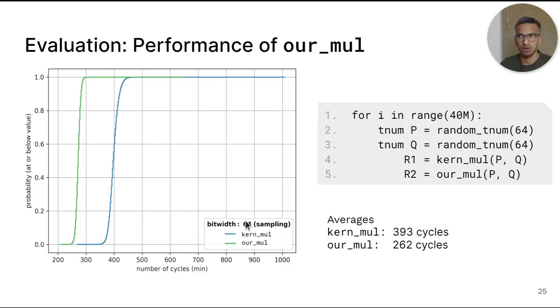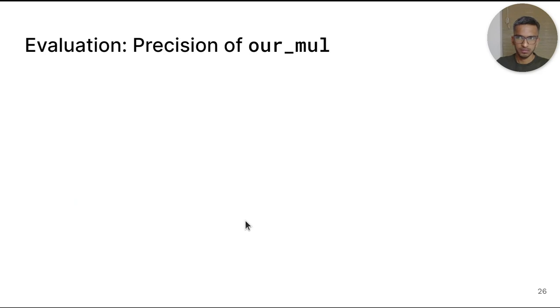First, we evaluate the performance of our algorithm compared to the Kernel's algorithm. We generate 40 million random TNUM pairs. These TNUMs are of width 64 as the kernel uses 64-bit TNUMs. Performance is measured simply using the time it takes in CPU cycles to perform the multiplication. What is shown here is the CDF of the cycles taken by each algorithm. We observe that in general, our_mul in green is faster than Kernel in blue. On average, Kernel takes around 393 cycles and our_mul takes around 262 cycles. So overall, it is 33% faster.